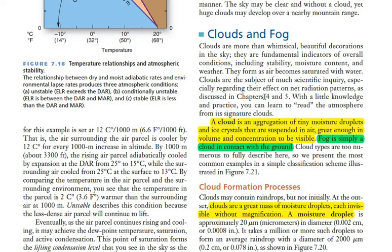A cloud is basically a combination of moisture droplets high up in the sky. Clouds can be found at lower elevations and sometimes even near the ground. When a cloud forms near the ground and touches the ground, it is called fog. Clouds form when water vapor — tiny water particles — condense due to cold temperatures and accumulate until they become visible.